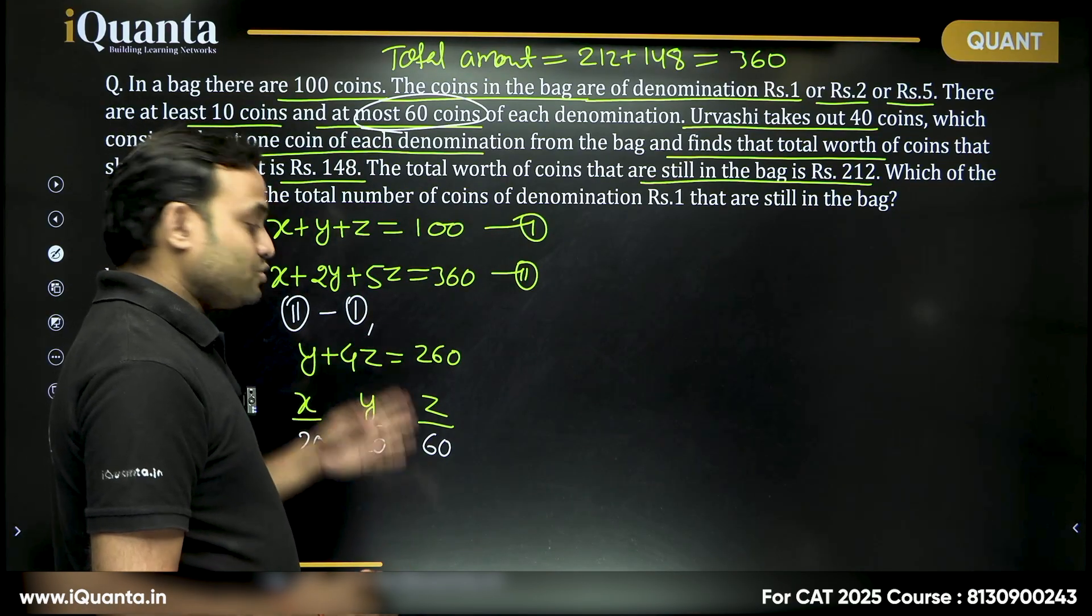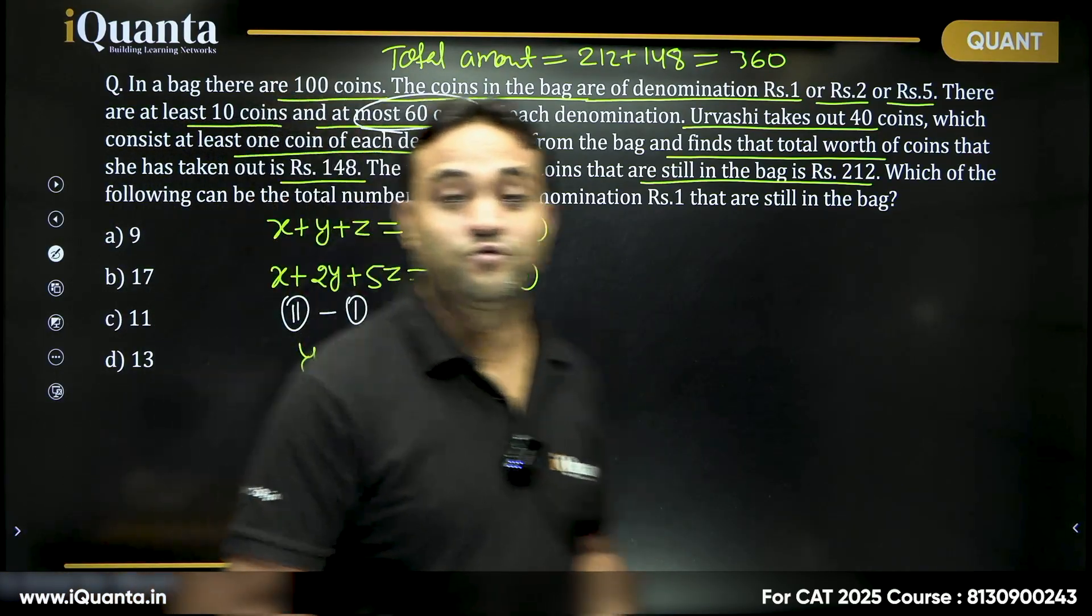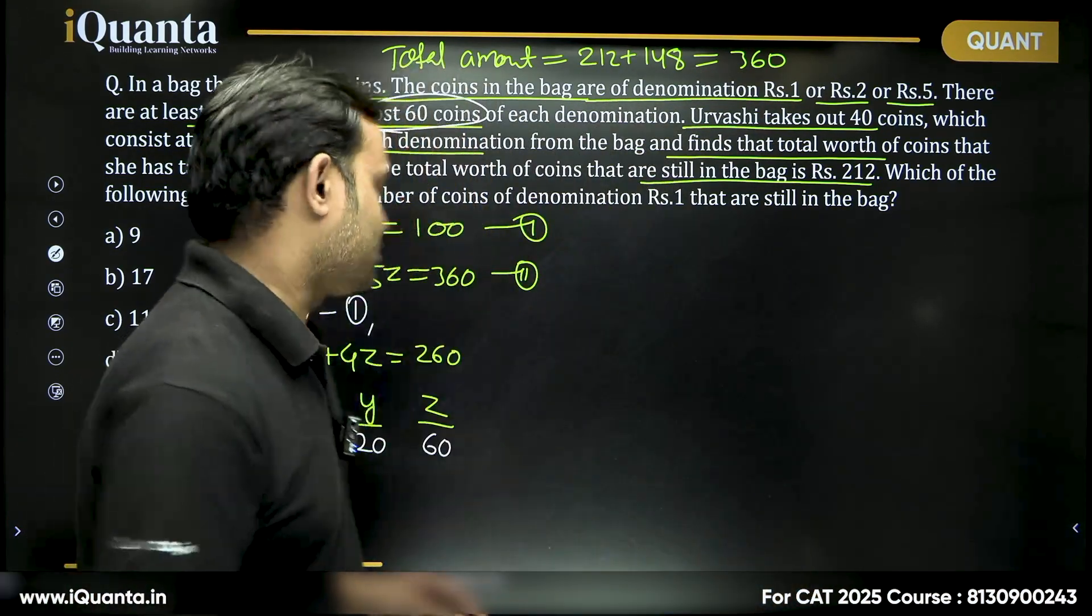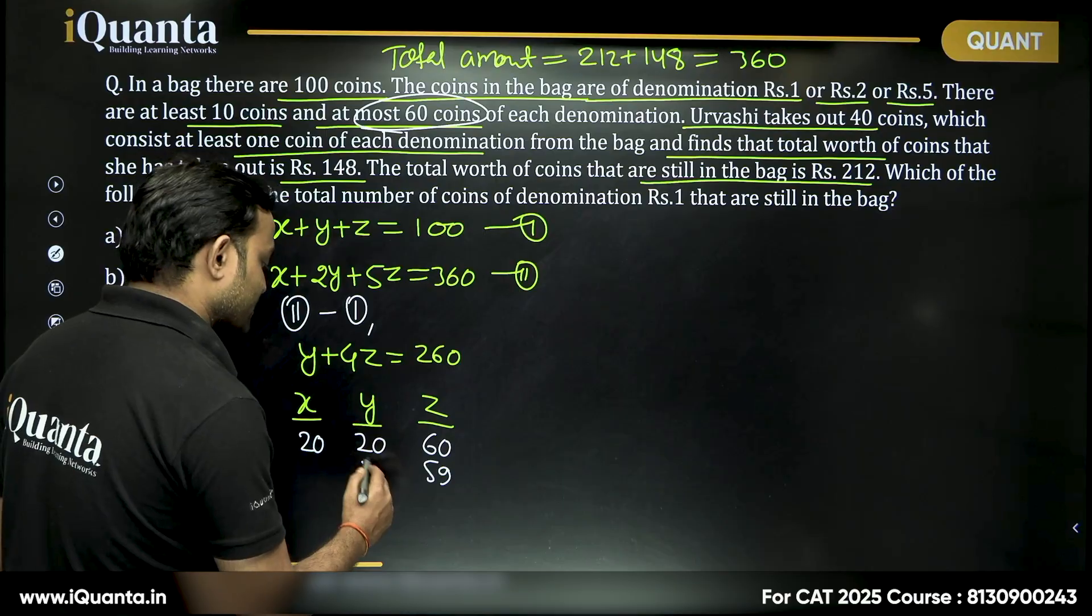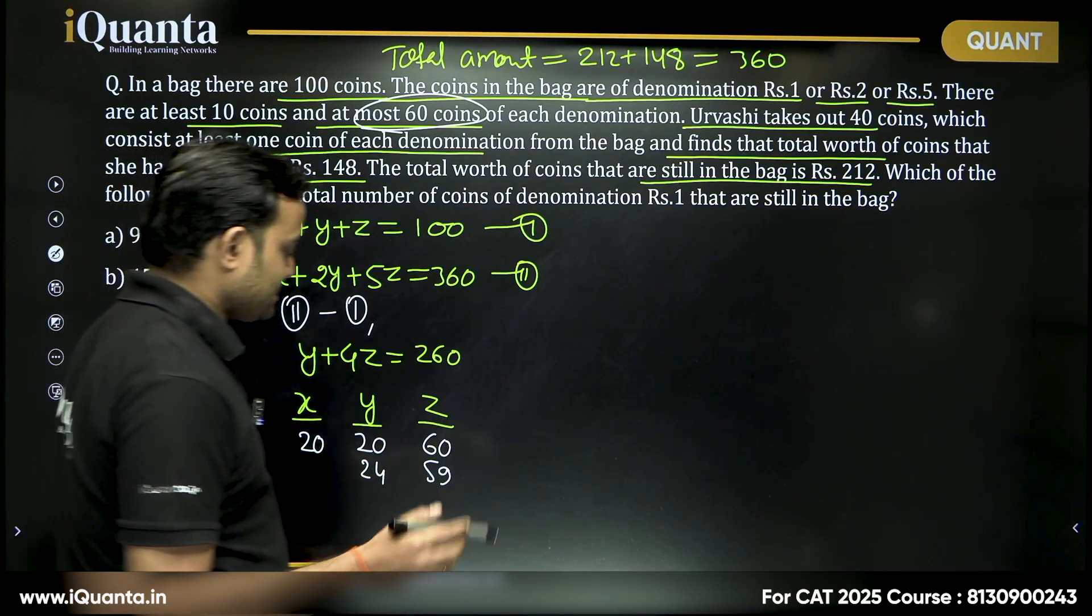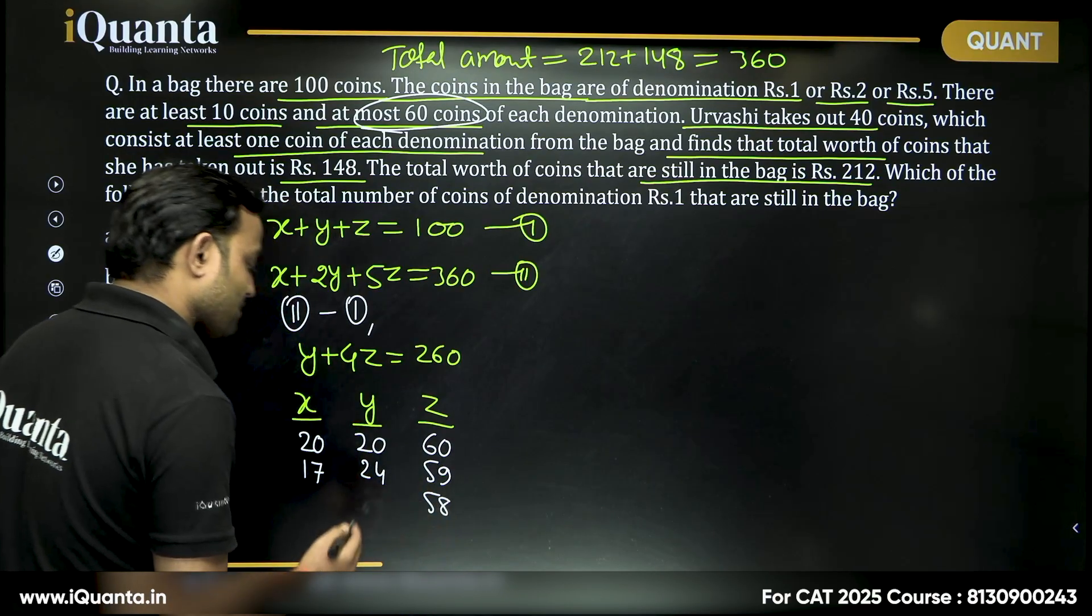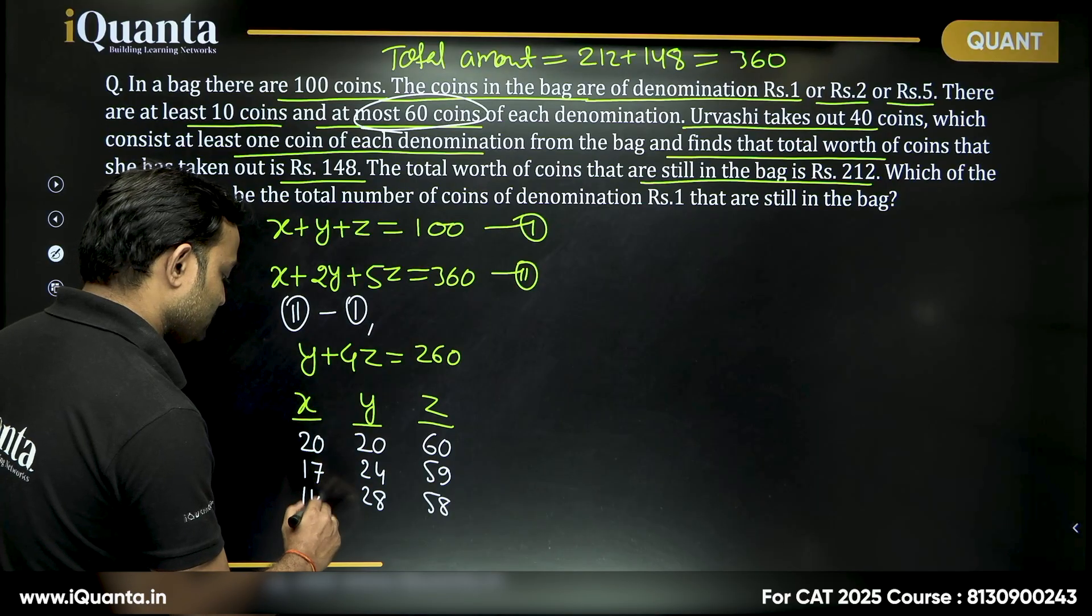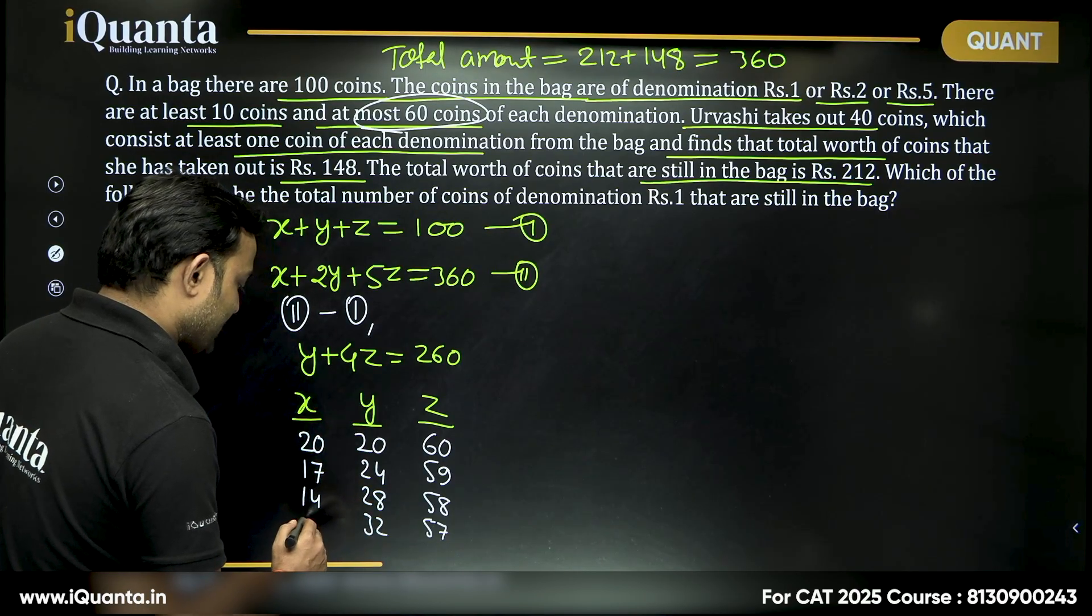Now we can reduce the value of z with the coefficient of y and increase the value of y with the coefficient of z. This is the nature of the values of the variables in integral solutions. So if I put next value of z which is 59, y will be 24 and x will be 24 plus 59 is 83, this will be 17. The next value we can take 58, this will be 28 and this will be 14.